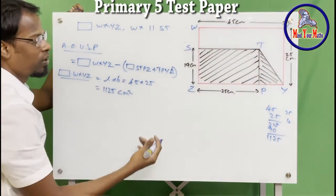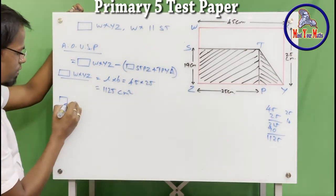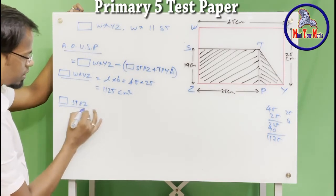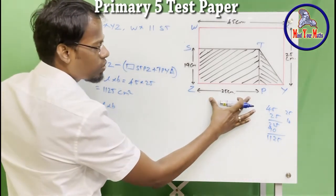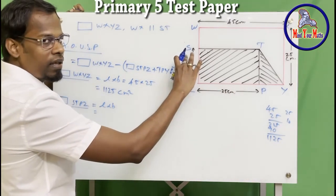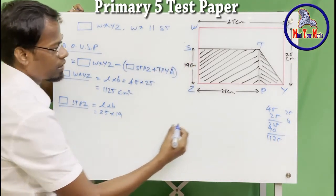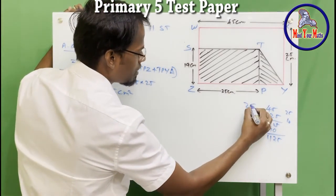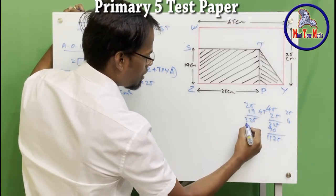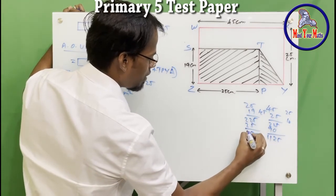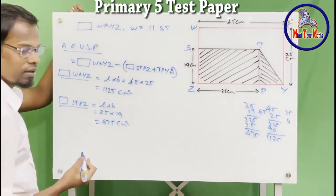Now let's find the area of rectangle STPZ. The formula is again length times breadth. The length is 25 and the breadth is 19 centimeters. So 25 times 19: 9×5=45, write 5; 9×2=18 plus 2 is 20, so 225. Then 1×25=25. Adding: 475 centimeters squared.